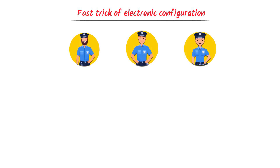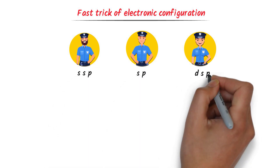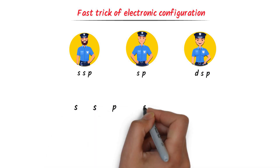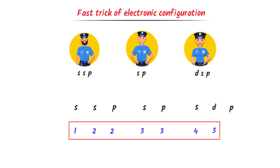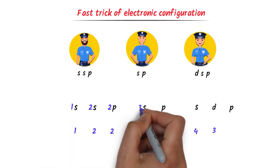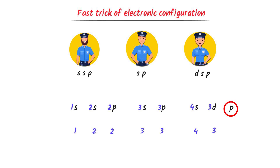Now let me teach you the super-fast trick of electronic configuration. Consider these three senior police officers: SSP, SP, and DSP. I write SSP, SP, and for DSP I write D, then S before D, and P after it. I write the numbers 1, 22, 33, 43, then bring these numbers up: 1, 2, 2, 3, 3, 4, 3. This last P has no number, so I erase it.